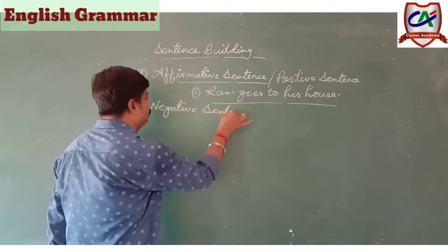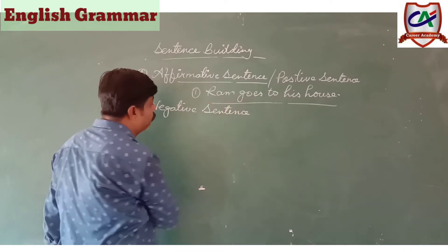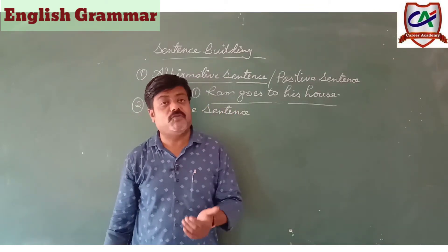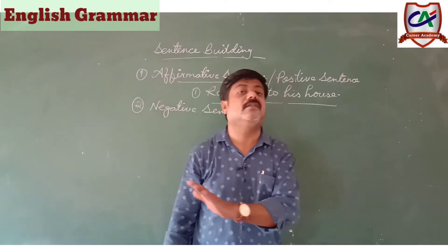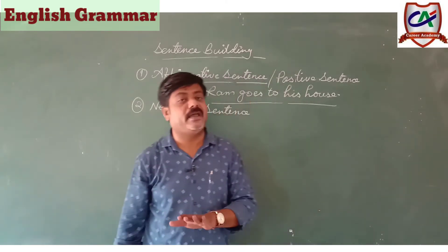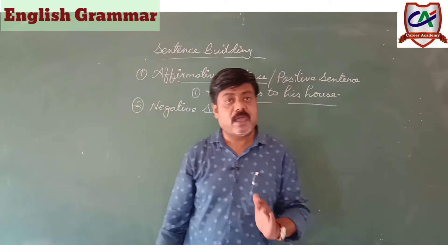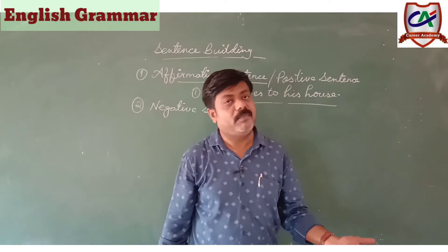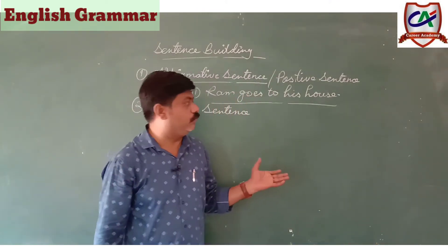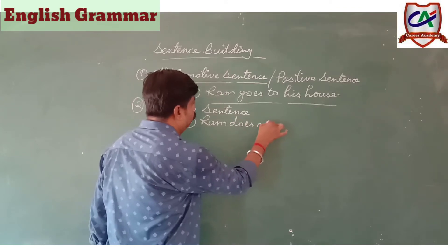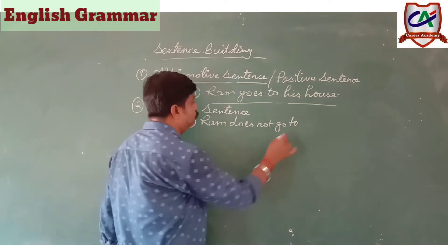Second type is Negative sentence. Negative sentence वो sentence है जो 'ना' करता है — जो sentence नकारता है वो negative है। For example: 'Ram goes to his house' — Ram अपने घर जाता है। अब इसका negative बनाओ तो: 'Ram does not go to his house' — Ram अपने घर नहीं जाता है। तो negative में 'does not' आया।